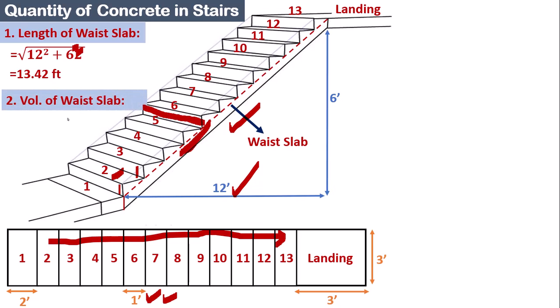Step two: calculate the volume of the waist slab. Volume equals length × width × thickness of the slab. By substituting the values, the volume equals 20.13 cubic feet. That is the volume of the waist slab.